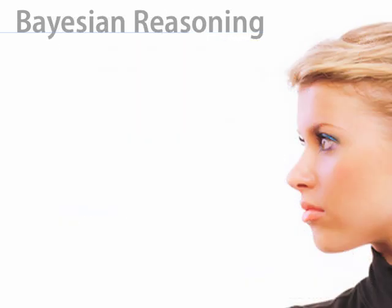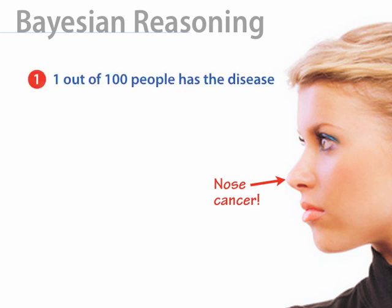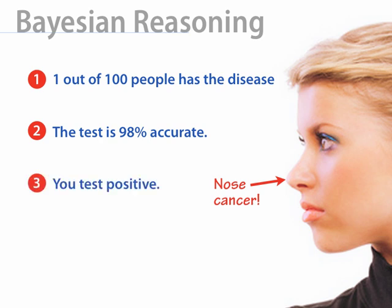To get a feel for Bayesian reasoning, we'll start with a classic example from Bayesian statistics. I'm going to make up a new disease called nose cancer. We know ahead of time that this disease is found in 1% of the population. Now we have a test to detect this disease, and the test is 98% accurate. You look in the mirror and your nose is red, so you go to the doctor. As we've already learned, this is likely a mistake — you probably just have a cold. But the doctor looks at your nose, recommends you get a biopsy, and two days later you get the call. Sure enough, you test positive for nose cancer.